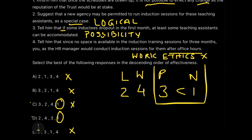Whenever you solve an order of effectiveness question and one option is a complete 'no' while another is a possibility, always keep the possibility before the 'no' — providing some ray of hope is better than a straight no. So the best response order is 2, 4, 3, 1: first a logical approach, then working extra hours if needed, then the possibility, and finally the no. The key technique is spotting the logical answer and the outright 'no' to eliminate options quickly.